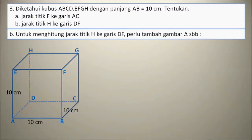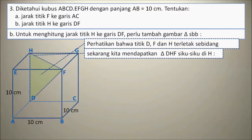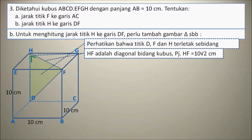B. Untuk menghitung jarak titik H ke garis DF, perlu kita tambah gambar segitiga sebagai berikut. Kita tambah gambar segitiga DHF. Perhatikan bahwa titik D, titik F, dan titik H terletak sebidang. Sekarang kita mendapatkan segitiga DHF yang siku-siku di H. HF adalah diagonal bidang kubus. Panjang HF, ingat rumusnya, sama dengan 10 akar 2, karena panjang rusuk kubus adalah 10.